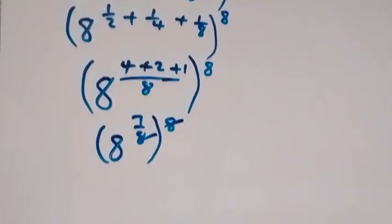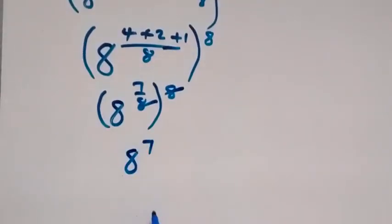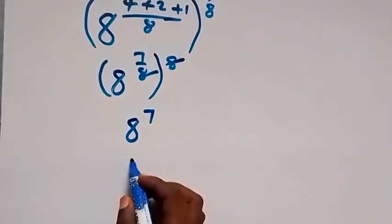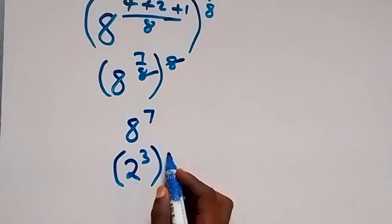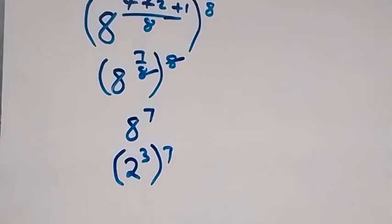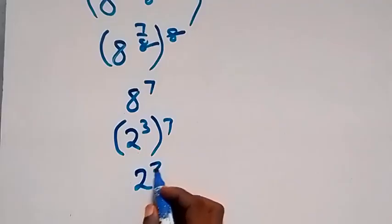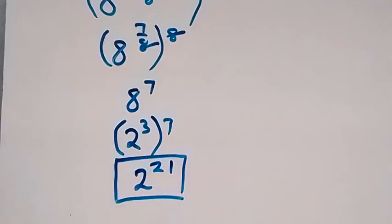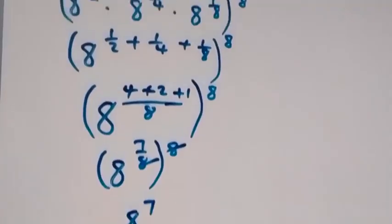This power multiplies, giving eight raised to power seven. We can also write eight in base two as two raised to power three, then raised to power seven. This multiplies again from the law of indices, giving two raised to power 21 — which is the same answer we got earlier. Whichever way, we get two raised to power 21 as the solution.